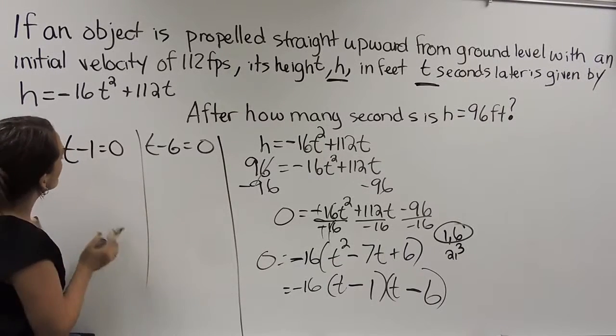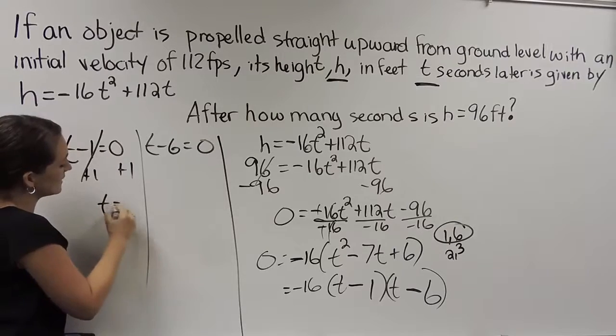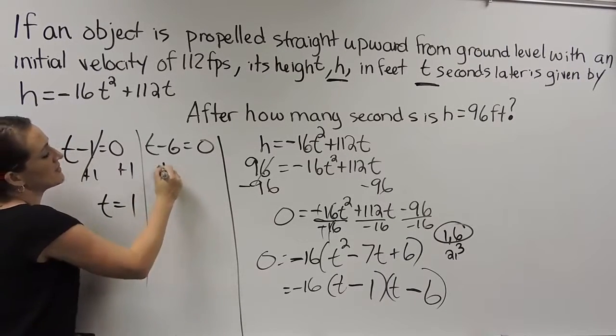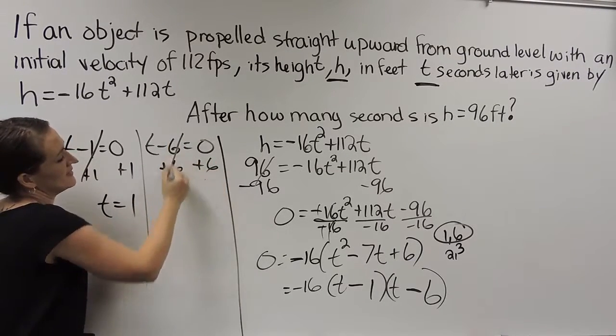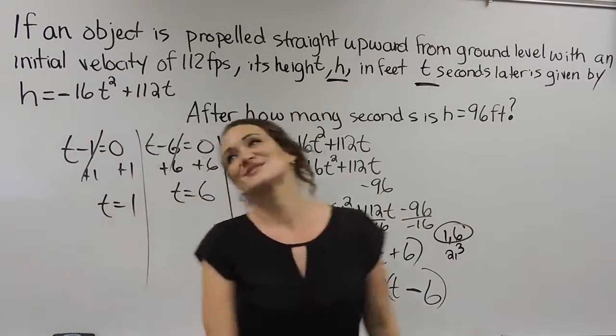So we're going to solve these two equations here and our solutions for this is going to be our solutions for our entire problem here. So in order to solve this one here, I'm going to add one on both sides. So t is equal to one and then I'm going to add six to both sides and t is going to equal to six.